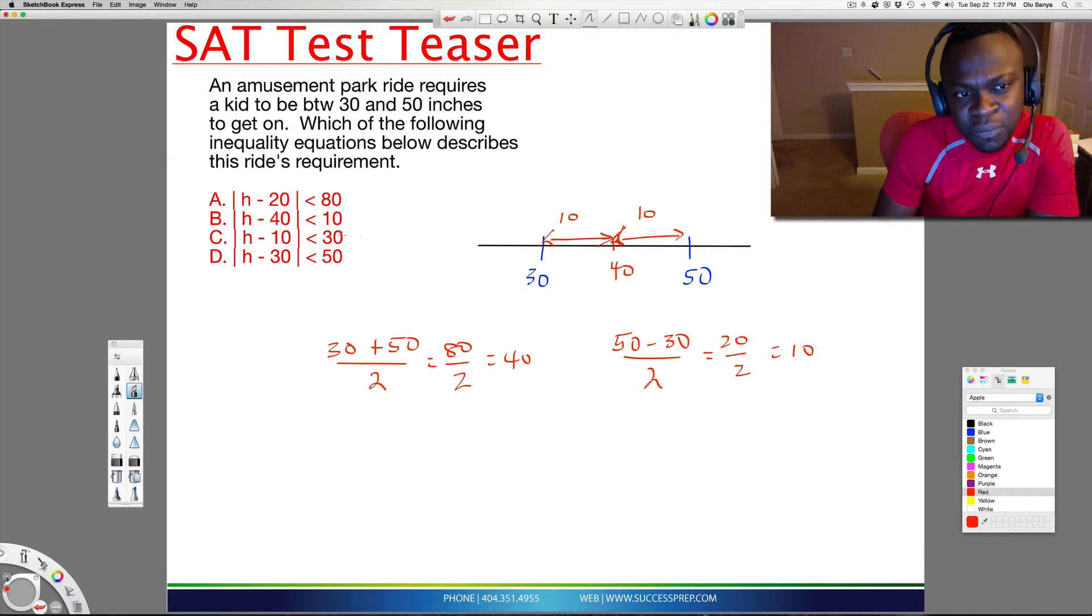If you think about this in terms of absolute value, absolute value doesn't really care whether it's 10 inches taller, which is like a plus 10, or if it's 10 inches smaller, which is like a minus 10. So it could be plus 10 or minus 10 from the average number of 40. The answer here will be B.